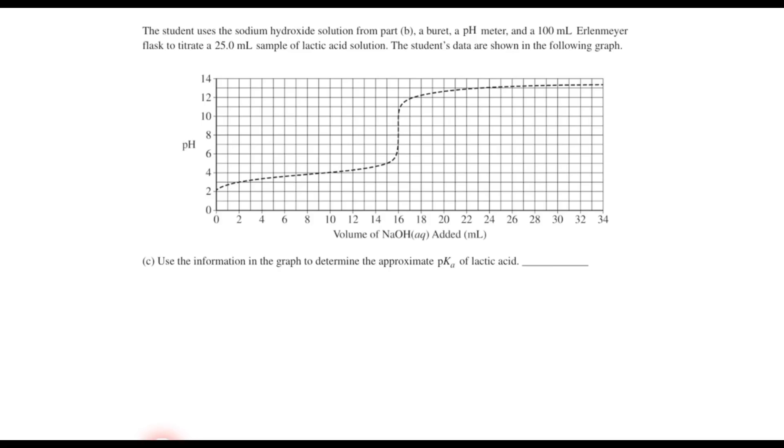Moving on to Part C, we have a titration curve, and now we're going to use that sodium hydroxide solution with a burette, a pH meter, and an Erlenmeyer flask to titrate a 25-milliliter sample of lactic acid solution. And we have the data given in this graph. And Part C says use the information in the graph to determine the approximate pKa of lactic acid. Well, we should remember that at the half-equivalence point, the pH is equal to the pKa of a weak acid used in a titration.